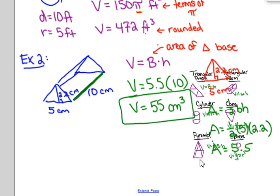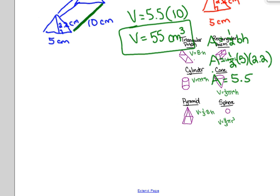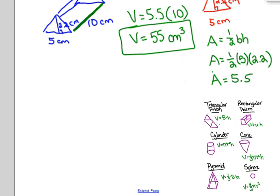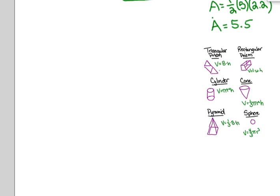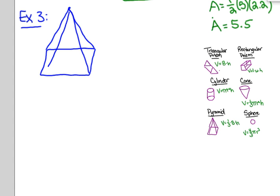Let me drag my sticky note down. You're probably going to want to keep moving your sticky note right along with you as well, because again, that really is the most important thing here — that you are using the correct formula. In example three, let's start with a figure that looks like this. I'm going to say that this base is a square measuring 6 feet by 6 feet, and that this height is 10 feet. The first thing we want to do is identify the shape — it's a pyramid. So the formula we're going to use is volume equals one-third times the area of the base times the height.